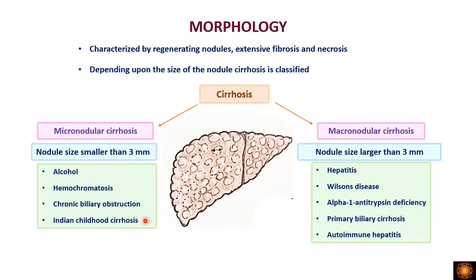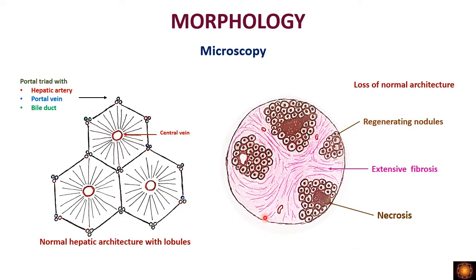Conditions responsible for micronodular cirrhosis include alcohol, hemochromatosis, chronic biliary obstruction, and Indian childhood cirrhosis — the latter caused by excess copper intake from water or food, leading to copper toxicity and hepatocyte damage. Conditions causing macronodular cirrhosis include hepatitis, Wilson's disease, alpha-1 antitrypsin deficiency, primary biliary cirrhosis, and autoimmune hepatitis.